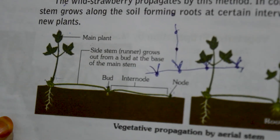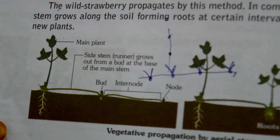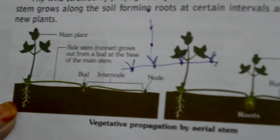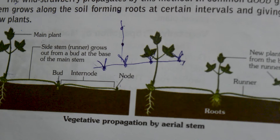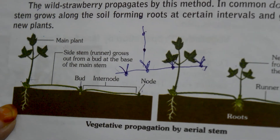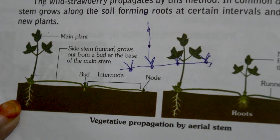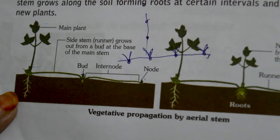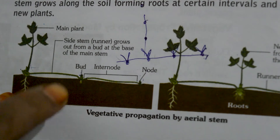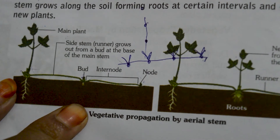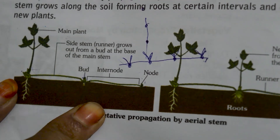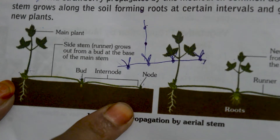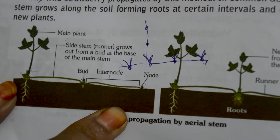The next is vegetative reproduction by aerial stem. This method is generally seen in grass or strawberry plants, where there is a slender branch with the stem almost horizontal or parallel to the soil. When this stem touches the soil, it develops buds and roots, and the bud then develops into a new plant.